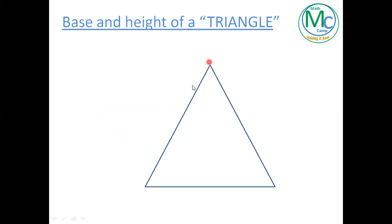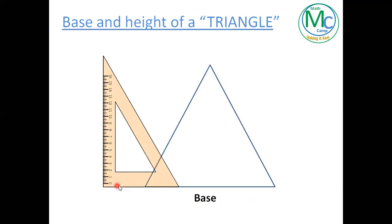Now I'm going to find out the height for this triangle — the base of the triangle is here. Once we have the base, I will place my set square so that the base of the set square overlaps the base of the triangle. After that, I will slide the set square over the triangle and keep an eye on the height side of the set square. Once this side touches any vertex of the triangle, I will stop sliding.